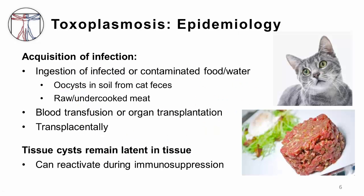Toxoplasmosis is a protozoa infection acquired by several different routes. Most commonly, it occurs via ingestion of contaminated food or water containing oocysts from cat feces in the soil. Another route is ingesting raw or undercooked meat that already contains toxoplasmosis cysts. You can rarely get it from blood transfusions or organ transplantation, and another important route is transplacental transmission — it is an important cause of congenital infection.